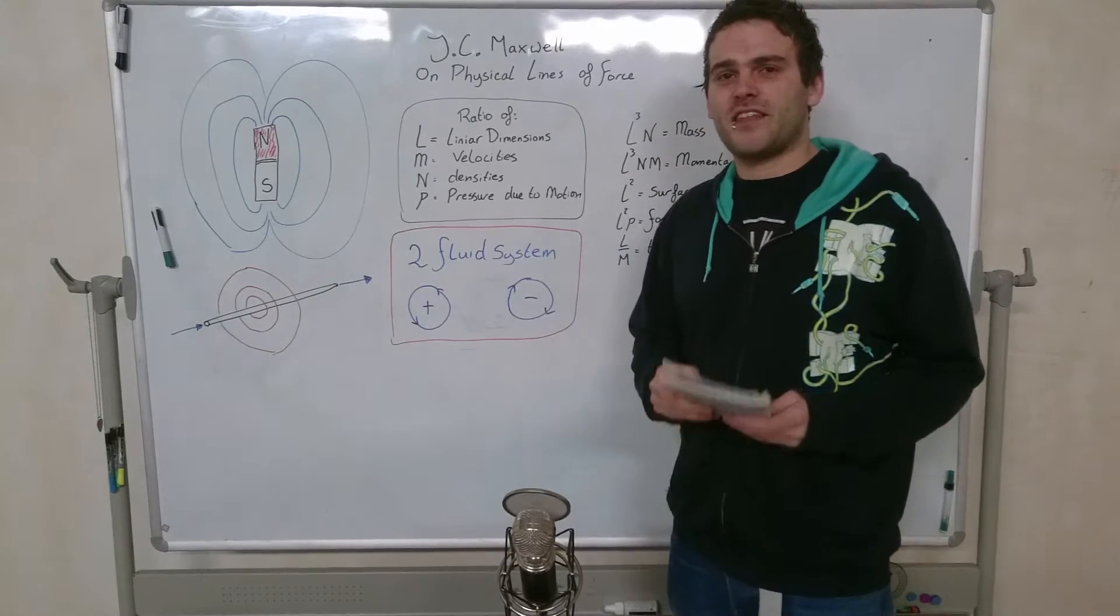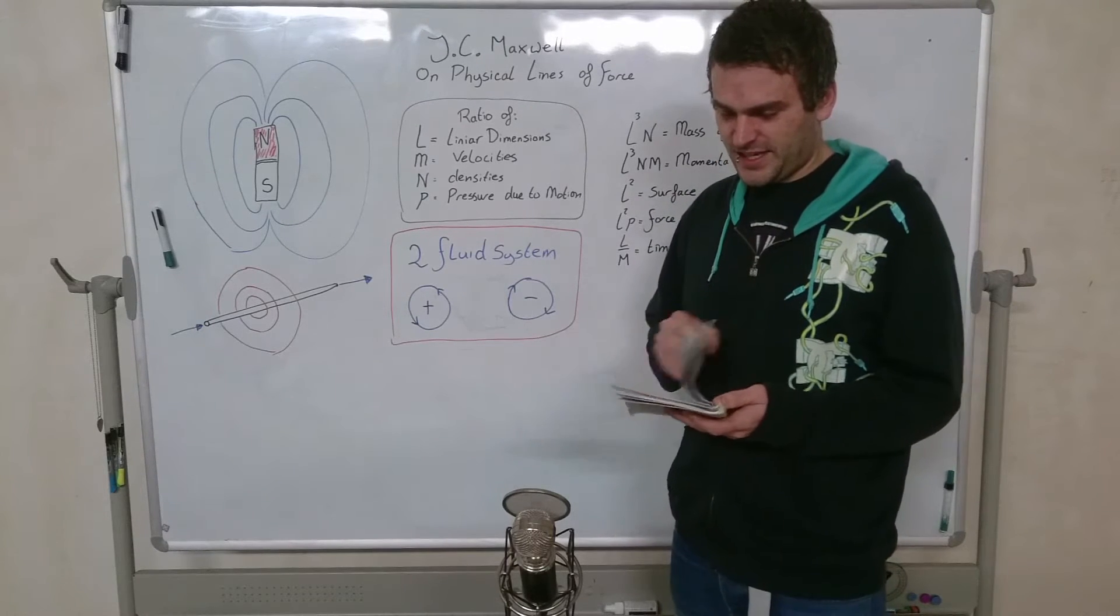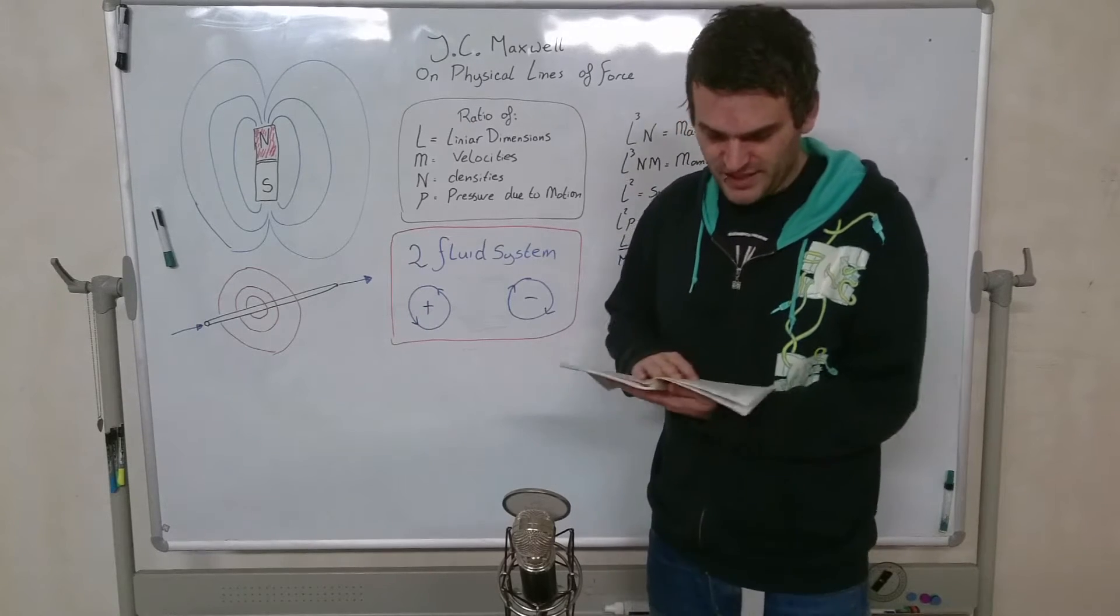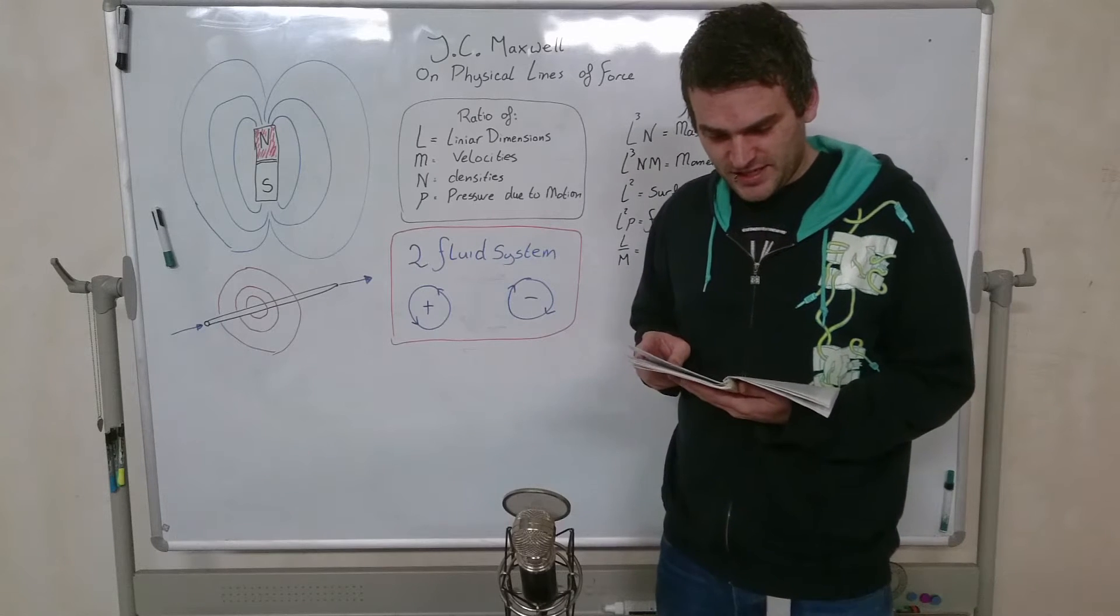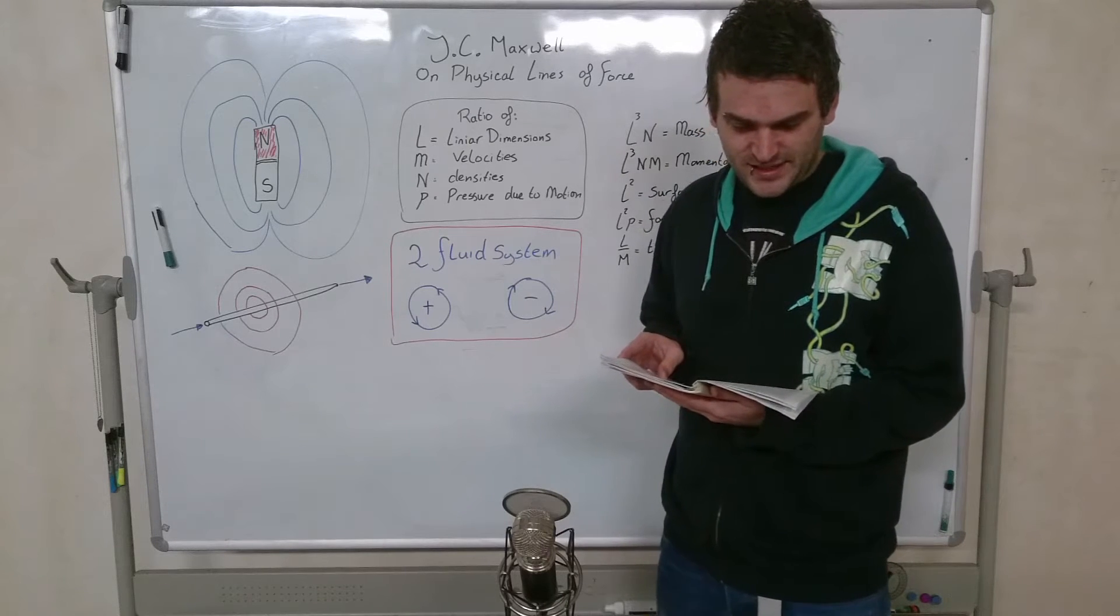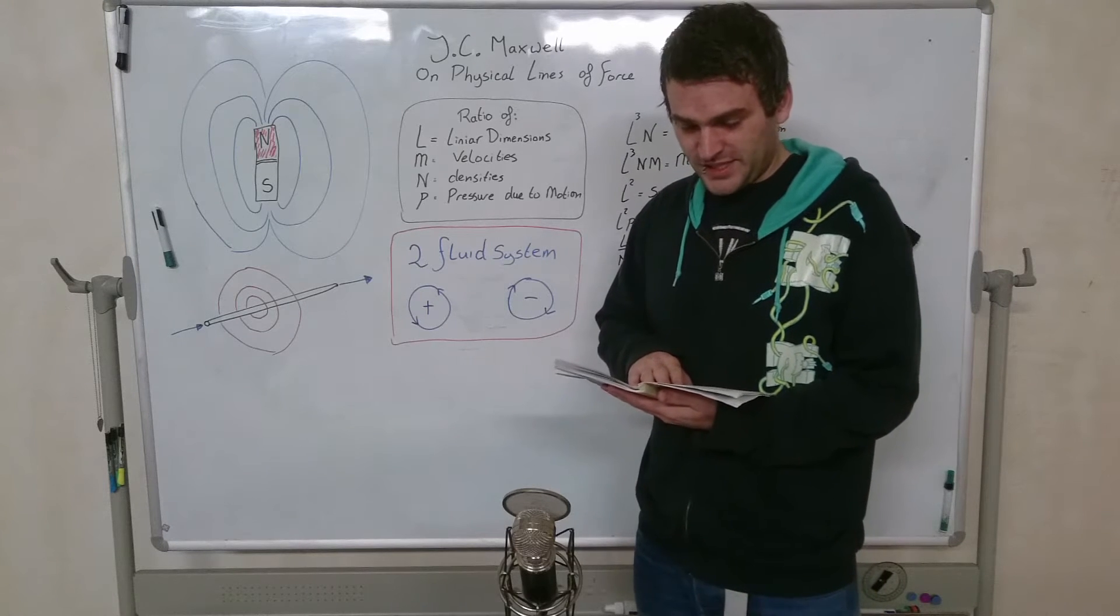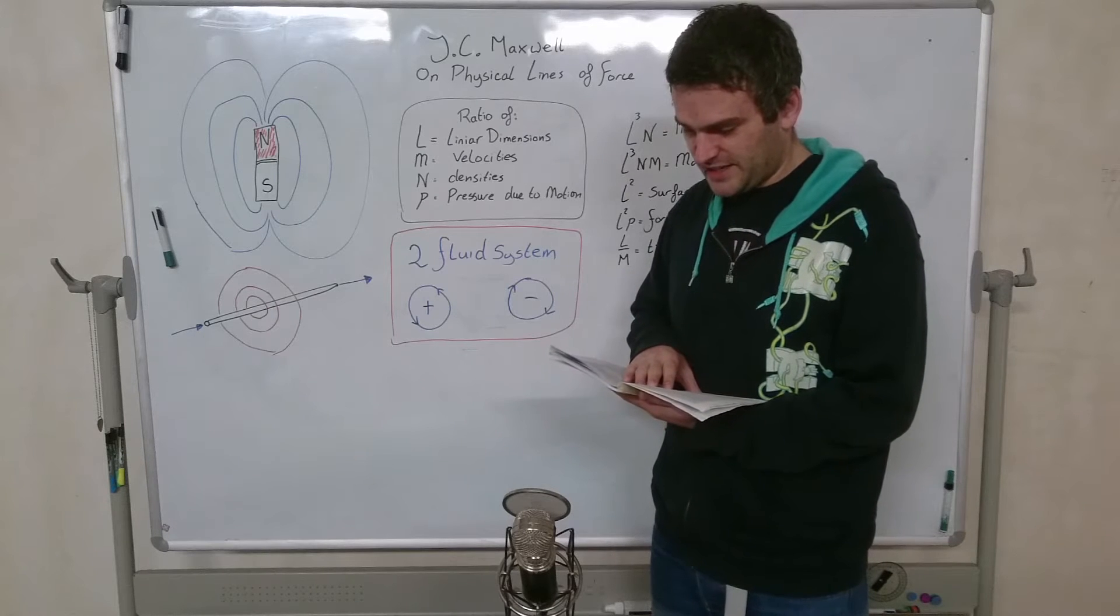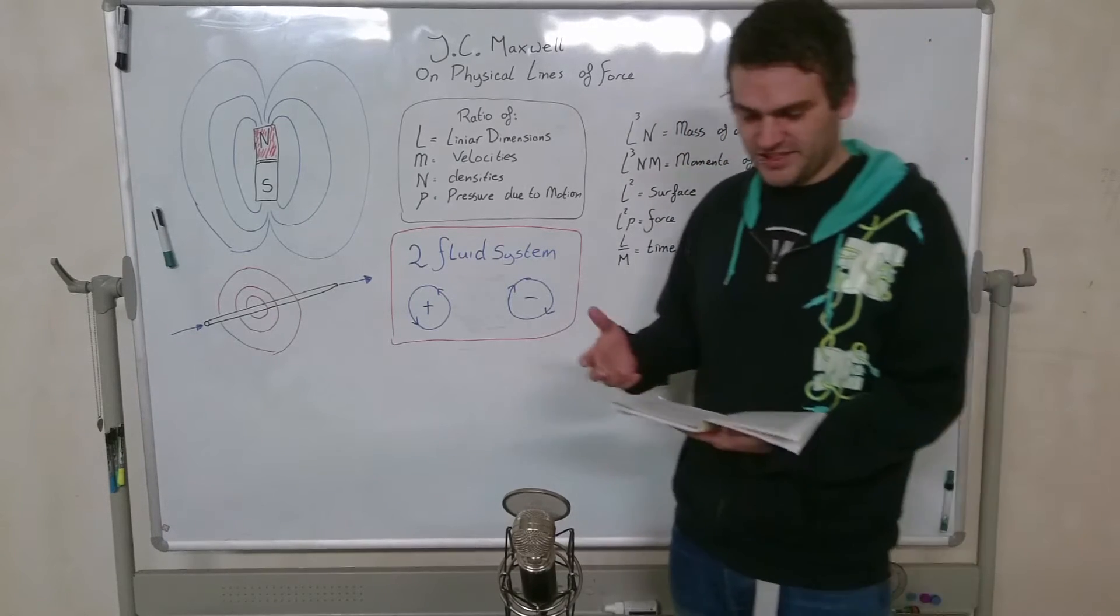It's a theory of molecular vortices applied to the magnetic phenomena. The proposition one by Maxwell would be: if in a two-fluid system geometrically similar, the velocities and densities at corresponding points are proportional, then the differences of pressure at corresponding points due to the motion will vary in the duplicate ratio of the velocity and the simple ratio of the densities.